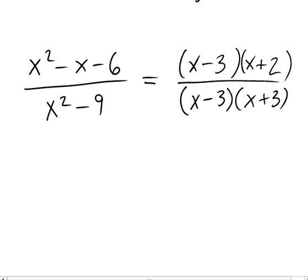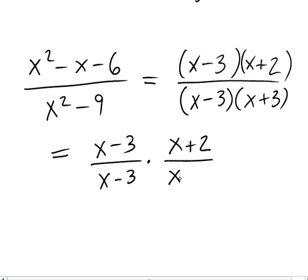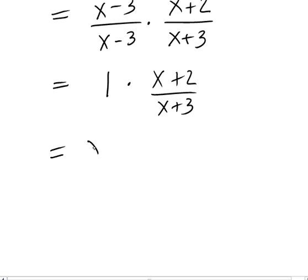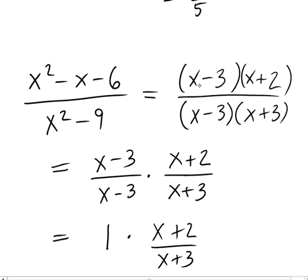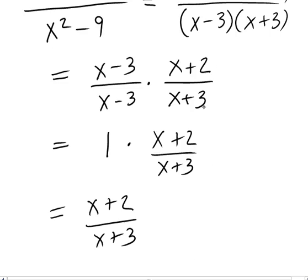And now the difference of squares in the denominator can be factored into x minus 3 times x plus 3. Now we see these common factors, these x minus 3's here. So we can cross them out. And here's why they cross out. It's because you can write that fraction as a product of two fractions. And then the first fraction is equal to 1. Anything divided by itself is 1. And then finally when you multiply something by 1 it doesn't change it. So we get x plus 2 over x plus 3 is our final answer. And I never crossed anything out along the way but of course it is correct to cross out those x minus 3's.